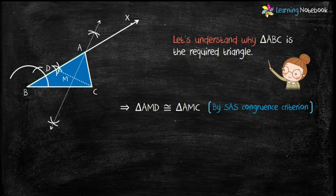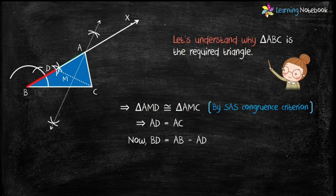Since both triangles are congruent, AD equals AC. Now BD equals AB minus AD, and since AD equals AC, we can write BD equals AB minus AC, which is the difference of the other two sides of the triangle. Therefore, the construction is justified. This was the construction of a triangle for Case 1 when AB is greater than AC.